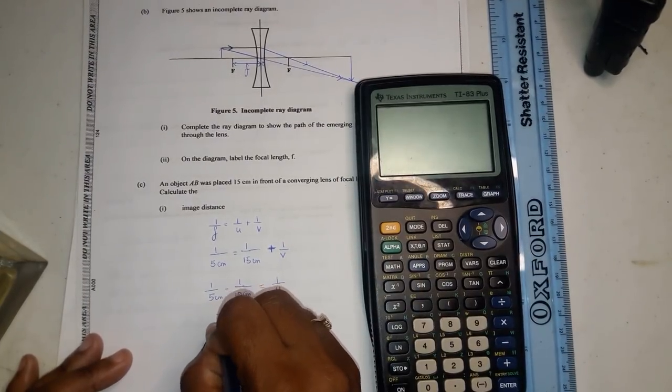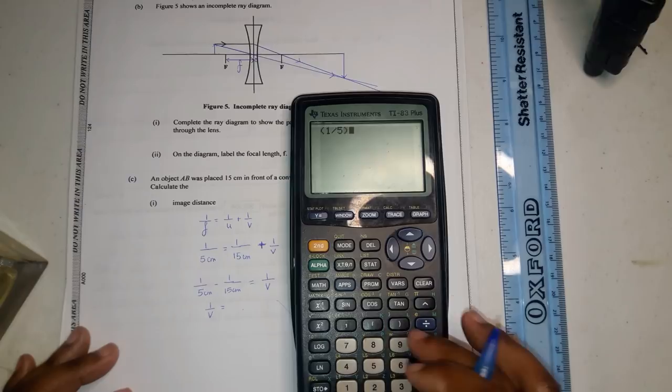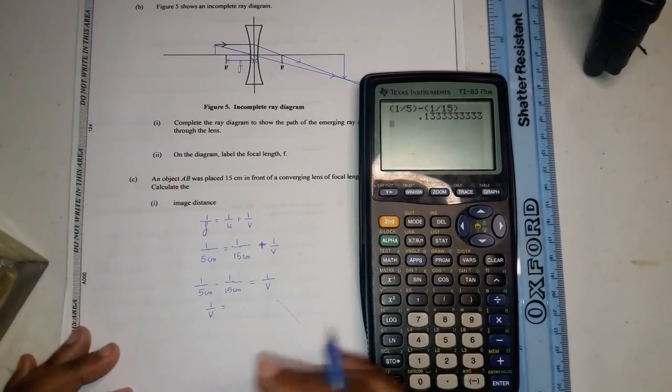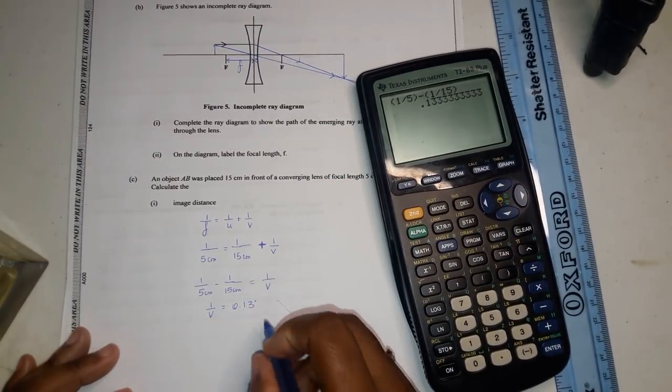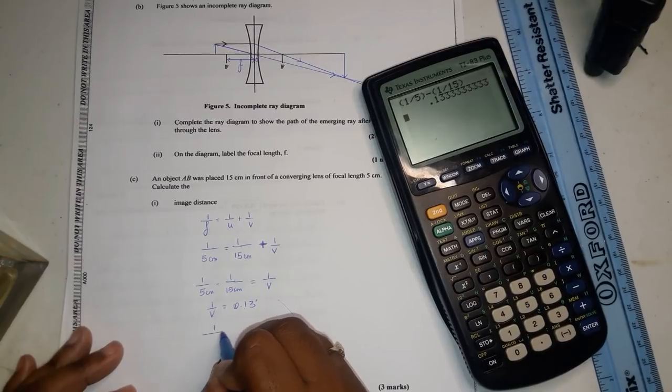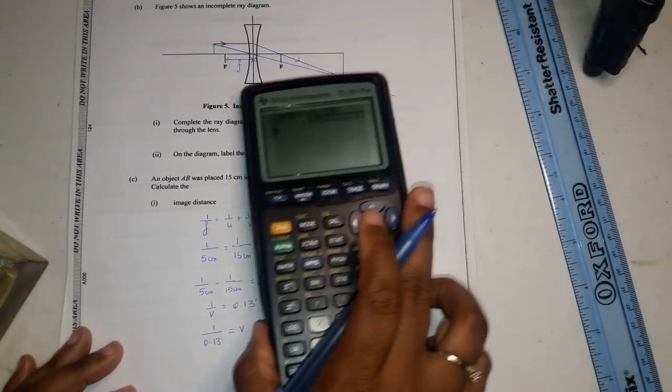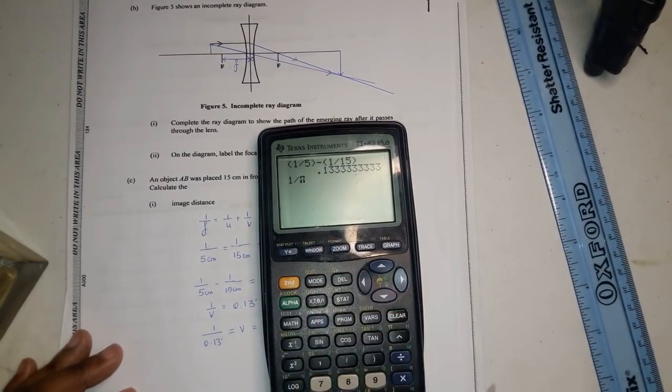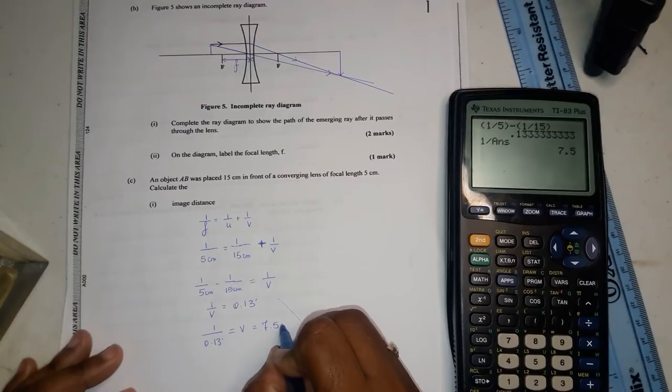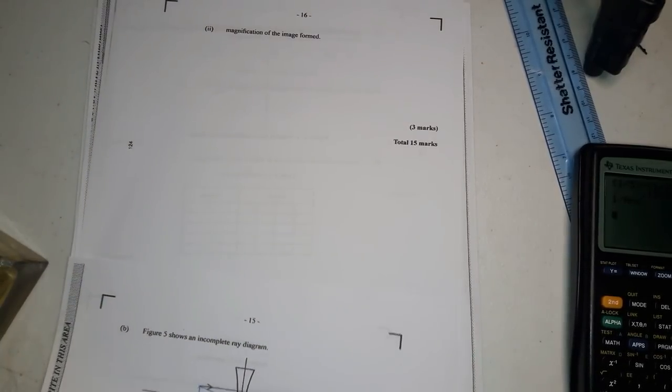One over v would eventually equal to one divided by five minus one divided by 15, you have 0.133. And so now you're going to have to transpose again. You're going to move the v up so you're going to say one over 0.133 equal to v. So v will be equal to one divided by this whole thing and I get 7.5. So v is equal to 7.5 centimeters. So the image distance is 7.5 centimeters.